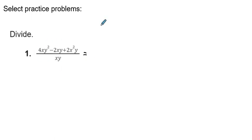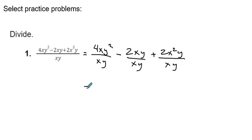So we're going to start by splitting this up, right? So we're going to go 4xy² over xy minus 2xy over xy and then plus 2x²y over xy. All right, and so when we go through...